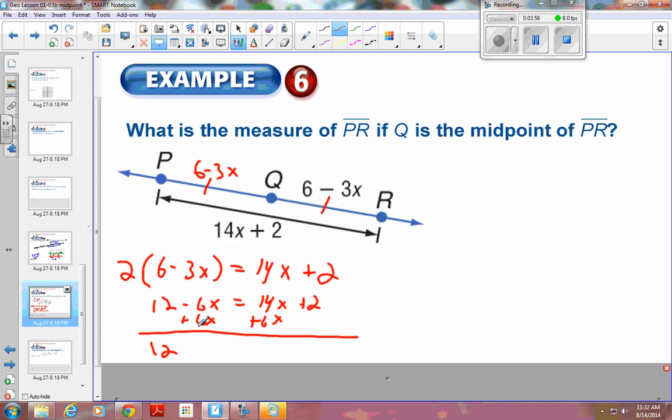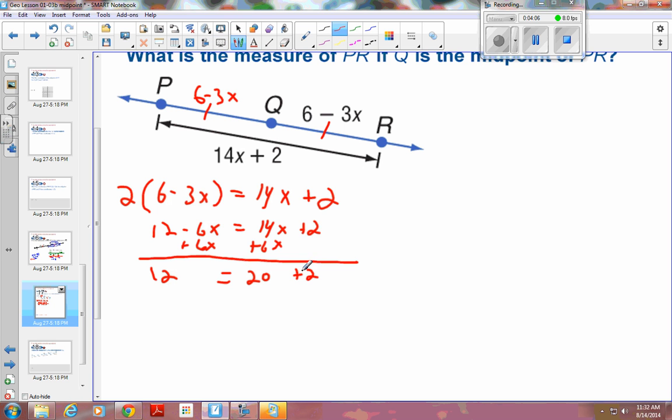Bring the 12 down. The 6X's cancel. 14X plus 6X is 20X plus 2. Then subtract 2 from both sides and you get 10 is equal to 20X. Then you need to divide both sides by 20 to get the X by itself. And you get 1 half is equal to X.